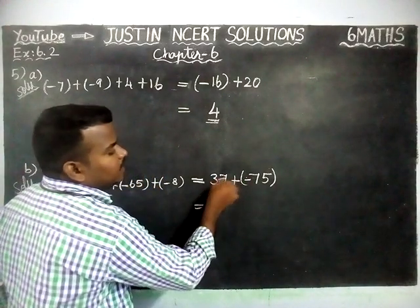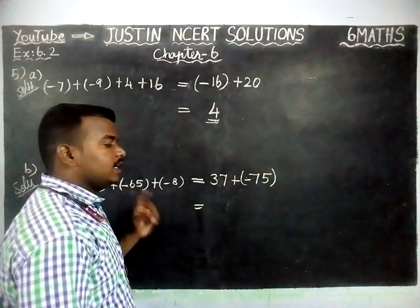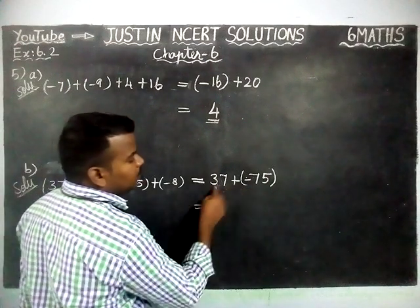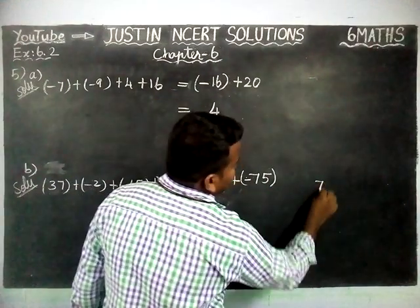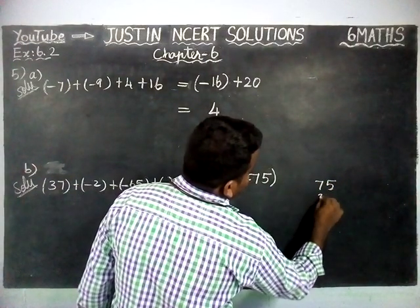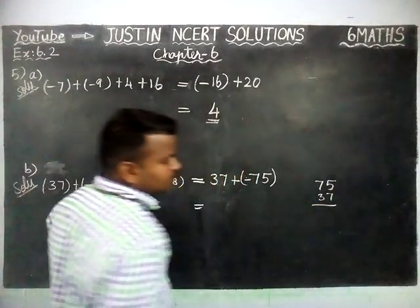Now, signs are different. If signs are different, we have to find the difference. Difference between these 2 numbers, we have to find it. 75 minus 37.